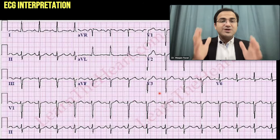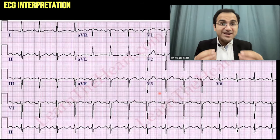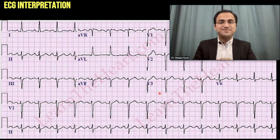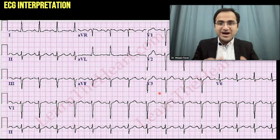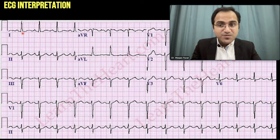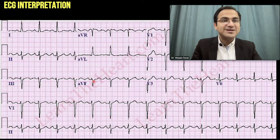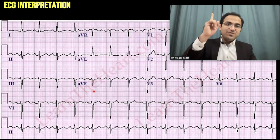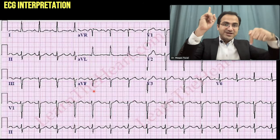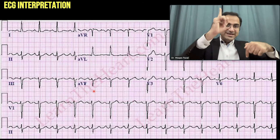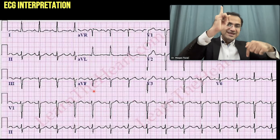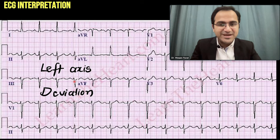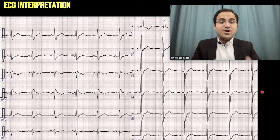Pause the video, look at the next ECG, and find the axis deviation. Coming to the answer: Lead I is pointing upward — positively deflected. Lead aVF is negatively deflected — pointing downward. Lead I is up and Lead aVF is down, so they are leaving each other — 'Left Leaves' — this is left axis deviation.